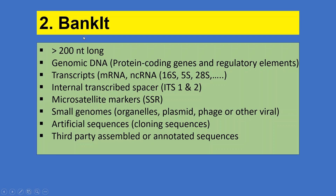You can also submit complete or partial sequences through BankIt. BankIt recommends that sequences should be greater than 200 nucleotides — there are some exceptions, but generally the size should exceed 200 nucleotides. Submittable items include genomic DNA such as protein-coding genes and regulatory elements, transcripts such as mRNA and nuclear RNA, internal transcribed spacers, microsatellite markers, small genomes from organelles such as mitochondria and chloroplasts, artificial sequences from cloning, and third-party annotated sequences.